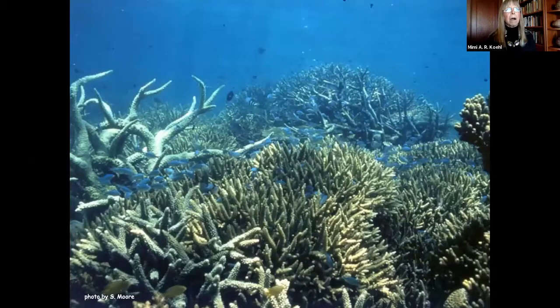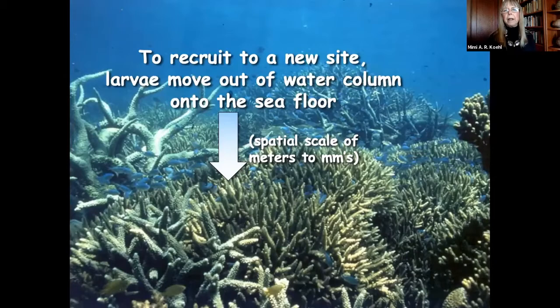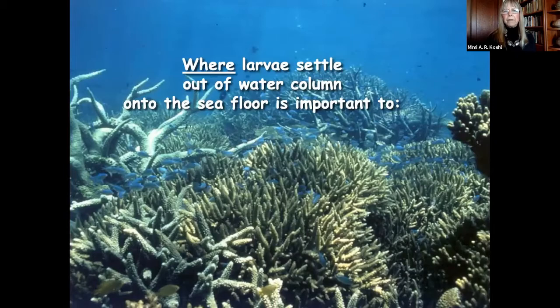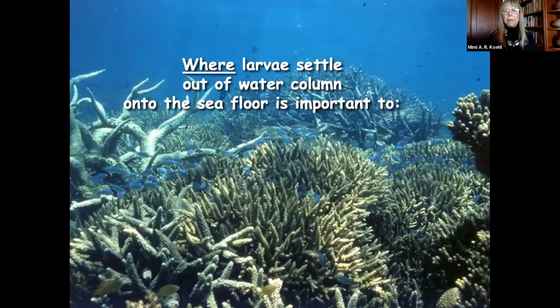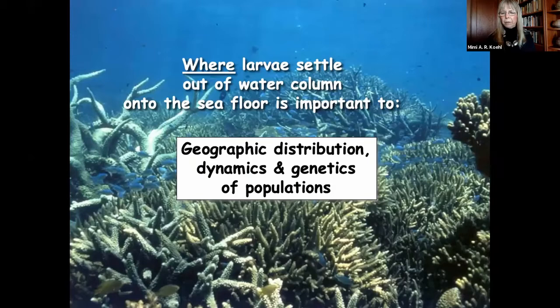The example I want to talk about today is marine larvae. Many bottom-dwelling organisms like barnacles, snails, and corals disperse to new habitats by releasing microscopic larvae that are transported by ocean currents. For those larvae to recruit to a new site on the sea floor, they have to move out of the water column down into the habitat — a process that happens on a spatial scale of meters to millimeters. Where larvae settle out of the water column onto the sea floor is enormously important ecologically, affecting the geographic distribution, dynamics, and genetics of populations.